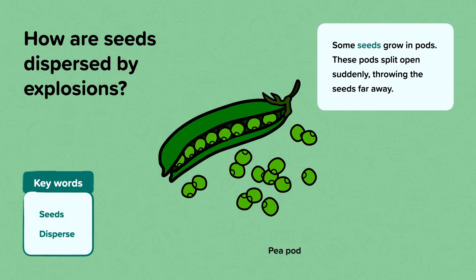Some seeds grow in pods. These pods split open suddenly and throw the seeds far away. Pea plants store the peas, which are the seeds, in the pods. When the pod splits, the peas explode out and also roll away.